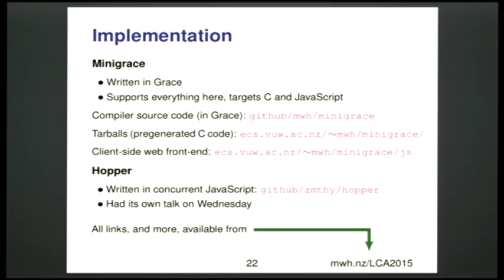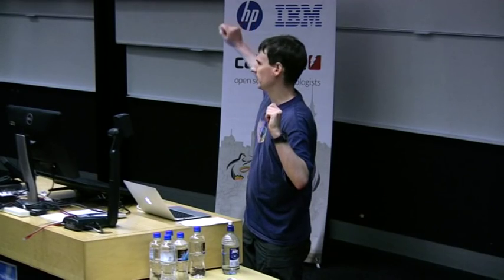Let's talk about implementation. There are two fairly complete implementations of Grace, both supporting everything we've seen. There's miniGrace, primarily written by me, written in Grace itself. It can compile Grace code into both C that runs on your machine and into JavaScript that runs in your web browser. Because it compiles to JavaScript, we can compile the compiler itself into JavaScript — so you can go to a web page, type in some Grace code, and run it right there in the browser client-side, without any server interaction.